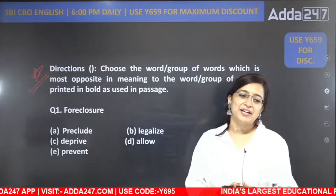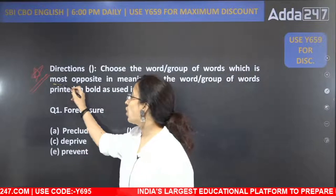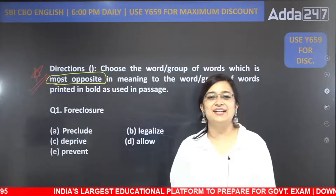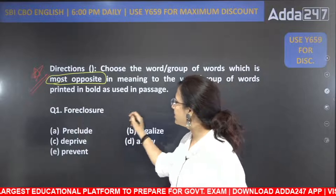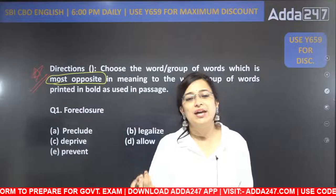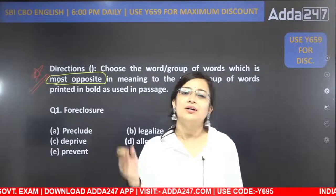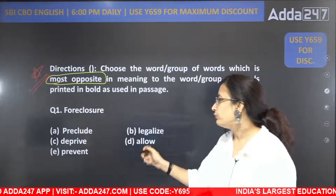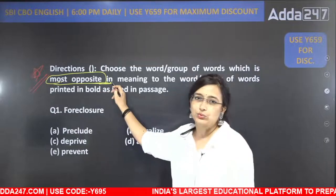I hope you have read the direction — it says 'most opposite.' Many children get this wrong. They see a vocabulary question and just look for synonymous words, but it is not asking for synonyms. You have to look for opposite words. So, foreclosure — here you have to find the opposite word.